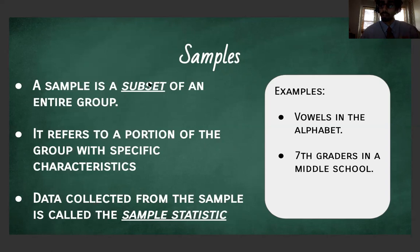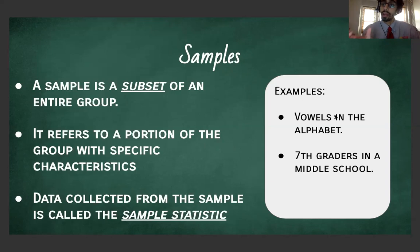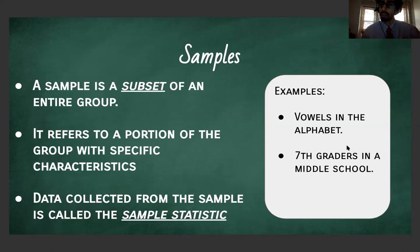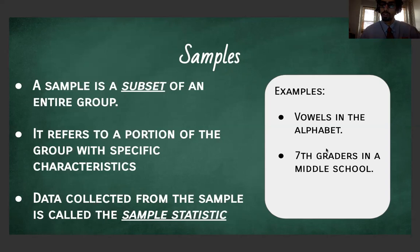Two really key vocabulary words to hone in on: the idea of a subset or a part is important, and also understanding what a sample statistic is. Some examples of samples we might encounter could be vowels in the alphabet — they are parts or a subset of the entire alphabet. Another one in our school context is seventh graders in a middle school — seventh graders are part of the whole middle school, a subset of the entire middle school. So that gives us an overview of what samples are: parts.